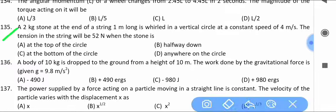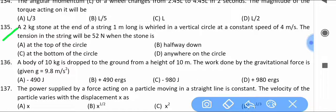A 2 kg stone at the end of a string 1 meter long is whirled in a vertical circle at a constant speed of 4 m/s. The tension in the string will be 52 N when the stone is — at the top, halfway down, at the bottom, or anywhere on the circle? Find the answer.